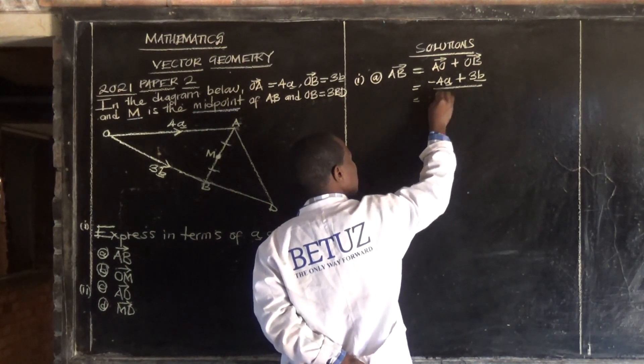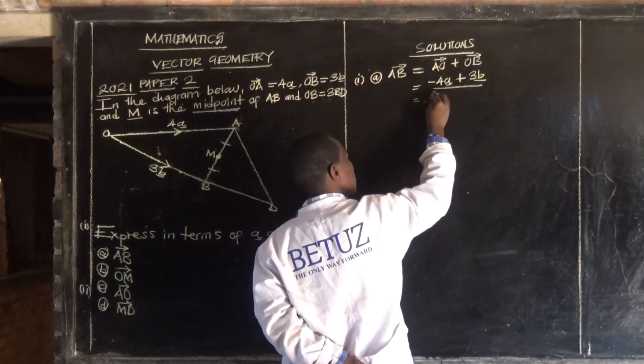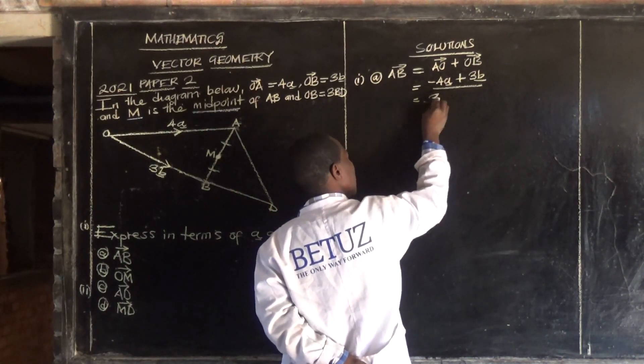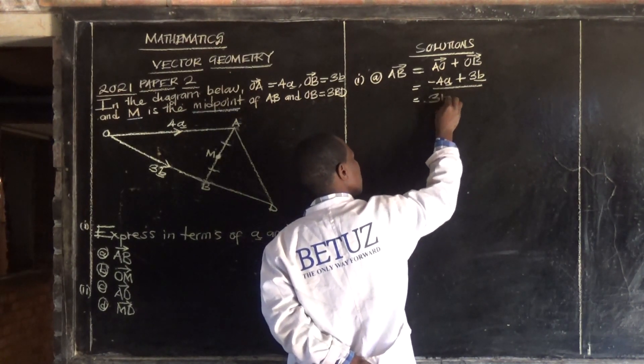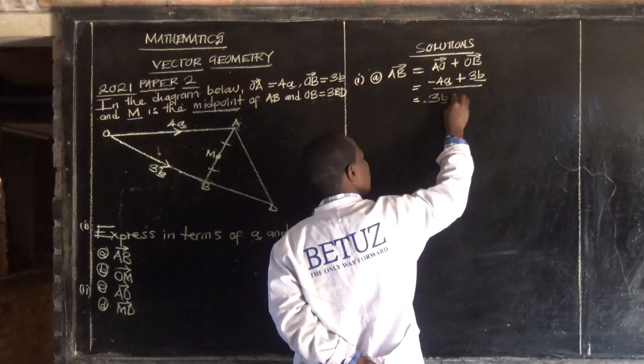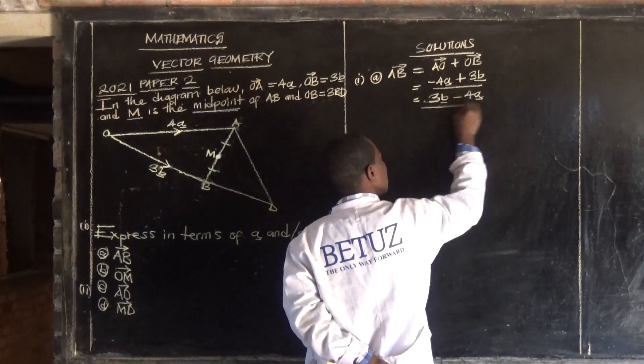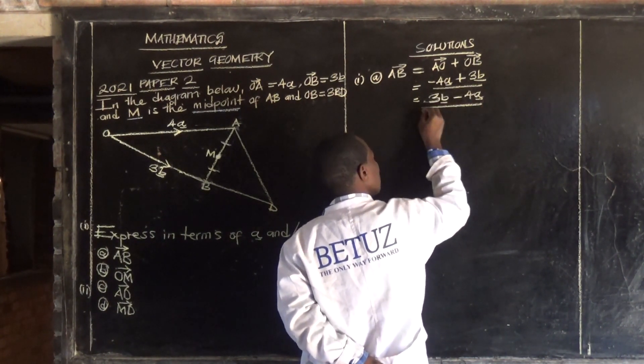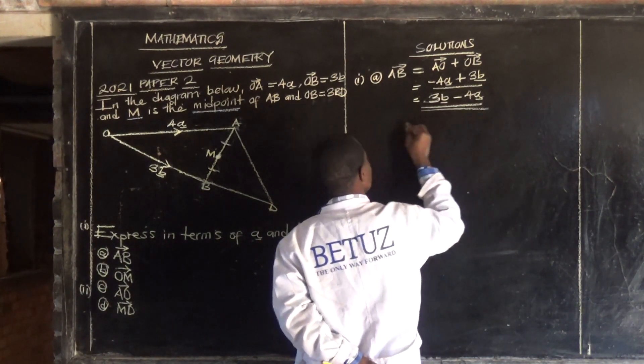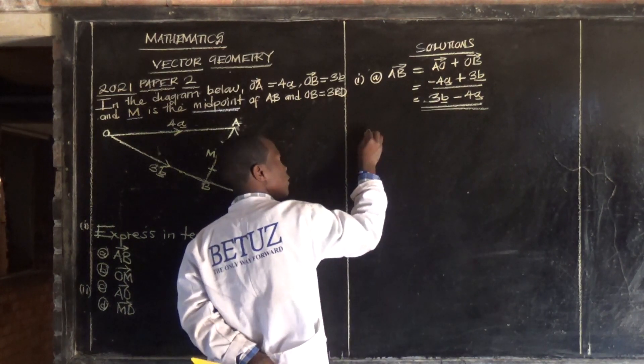So this is the answer, or we can start with the positive: 3 vector b minus 4 vector a. This is our answer.